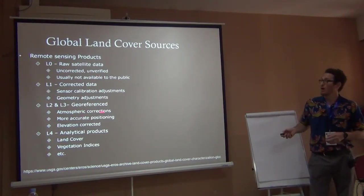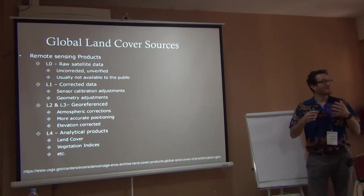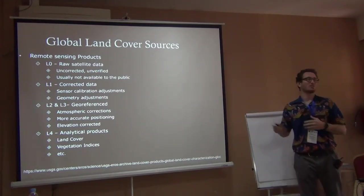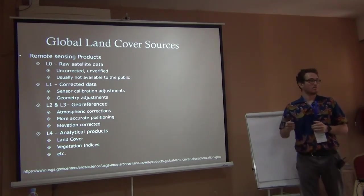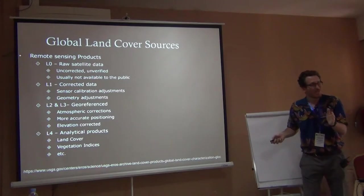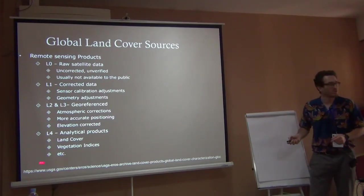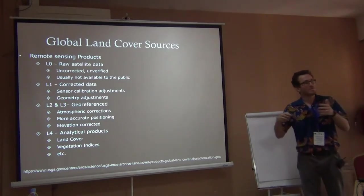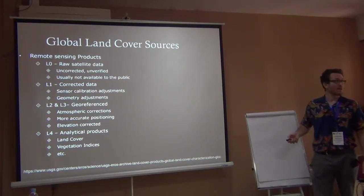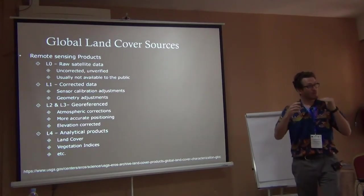L2 and L3 are the corrected image data. L4 is where they've done an analysis on it — they've taken the image and classified it, saying this is vegetation greenness, or this is land cover. They've identified forest, water, or level of vegetation. These end products are what we're usually looking for, and when you go to agency websites to look for data, they'll have these level indicators, so it's important to know what you're getting.